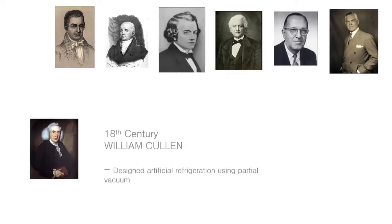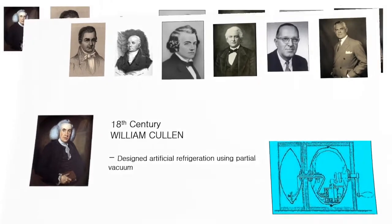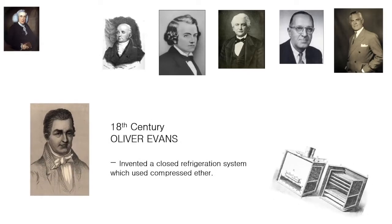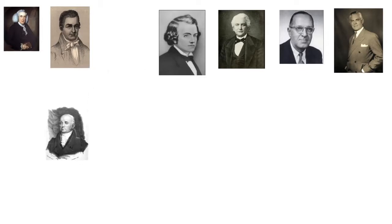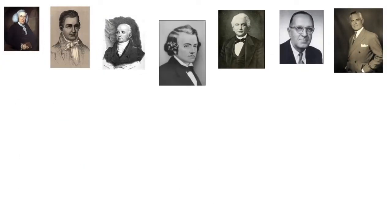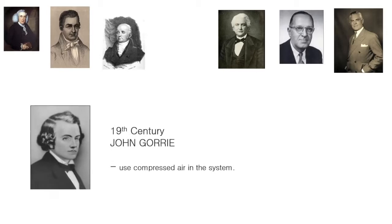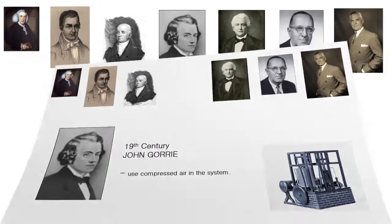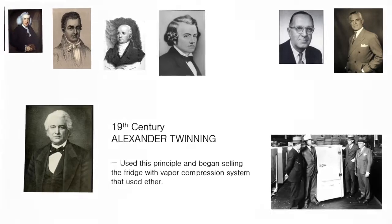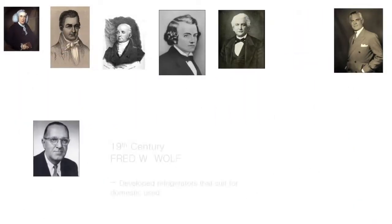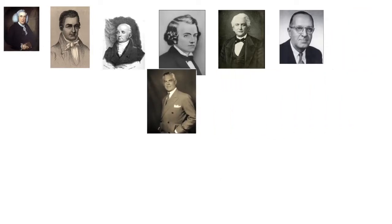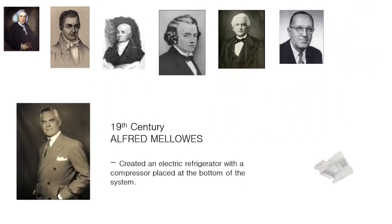During the 18th century, William Cullen designed artificial refrigeration using partial vacuum. Then, Oliver Evans invented a closed refrigeration system which used a compressor. Jacob Perkins constructed the first practical fridge. John Gorrie is the first person that used compressed air in the system. Alexander Twining used the principle and began selling the fridge with a vapor compression system. Fred W. Wolf developed refrigerators suited for domestic use, and Fred Mellows is the first person that created electrical refrigerators.